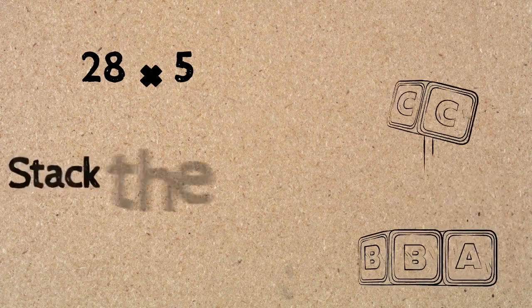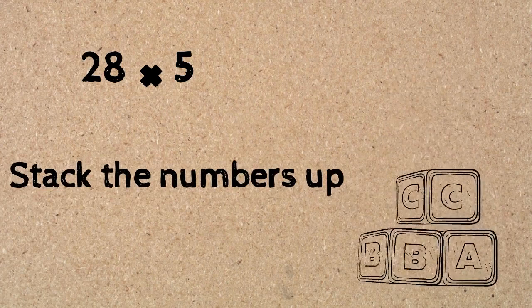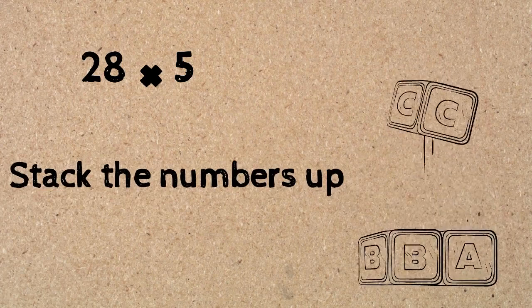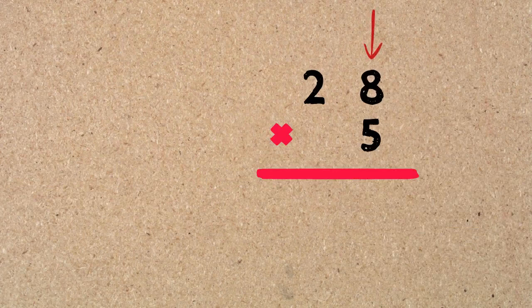We're going to have a look at another problem: 28 times 5. As we always do with addition, subtraction, or multiplication, we stack the numbers up. For the first step, we start with the bottom digit multiplying by the ones digit of the number on top.